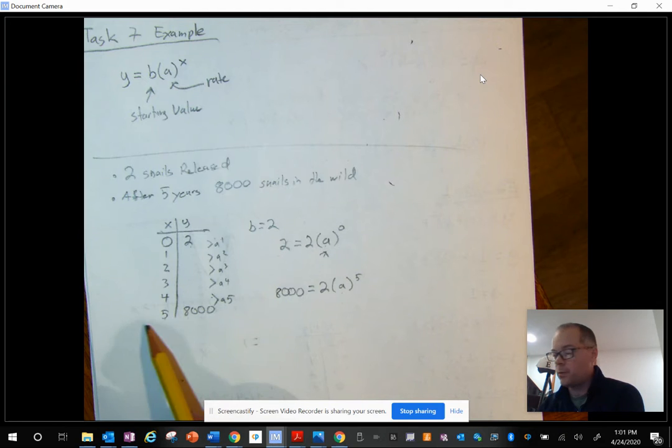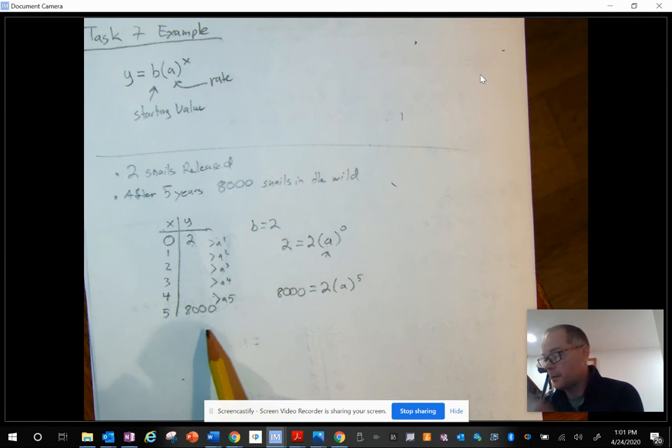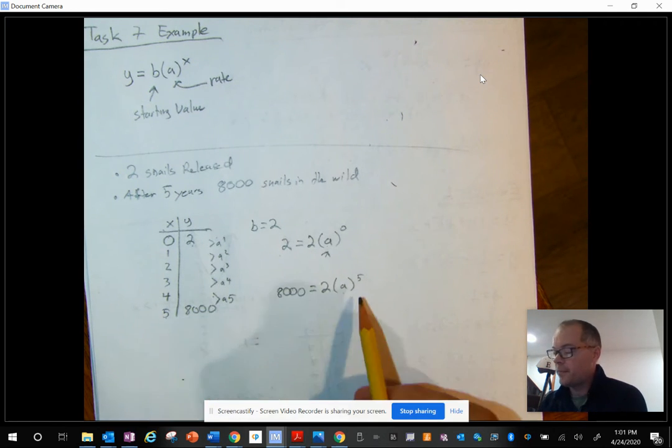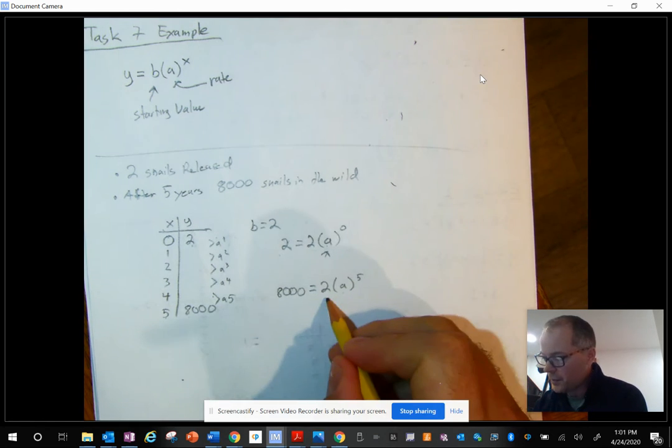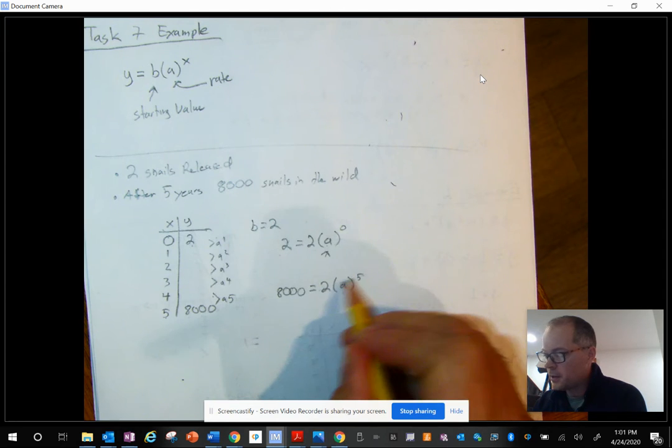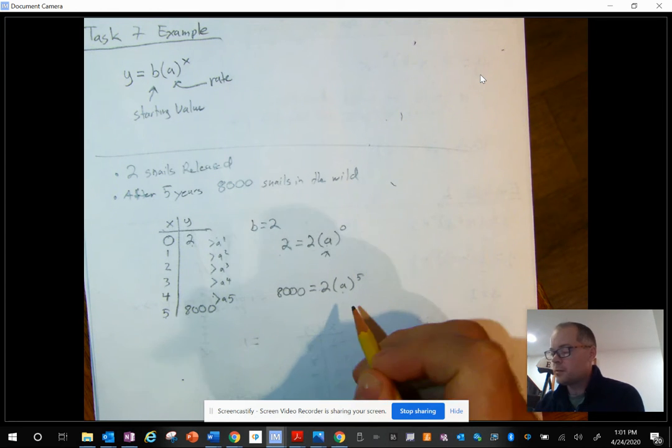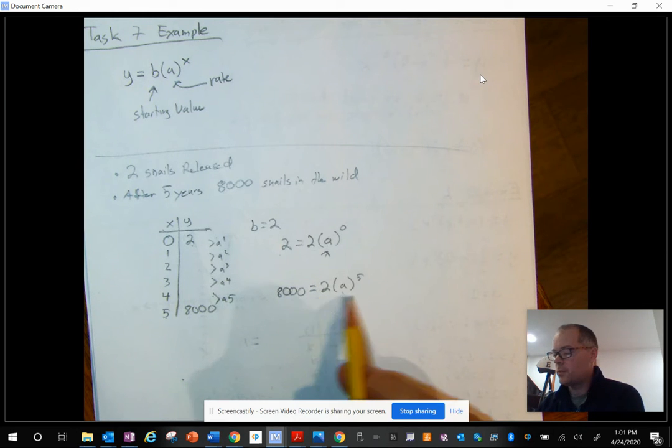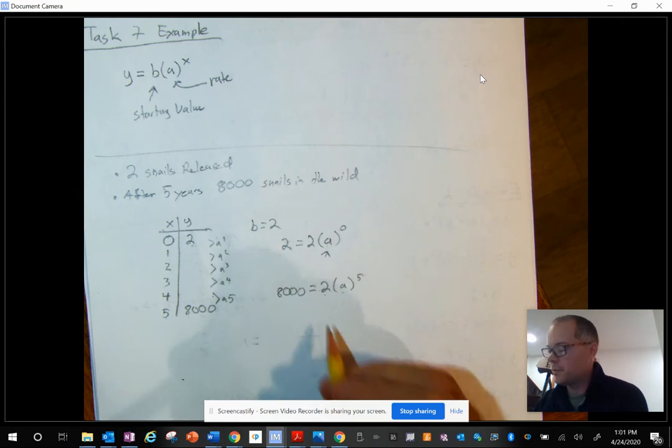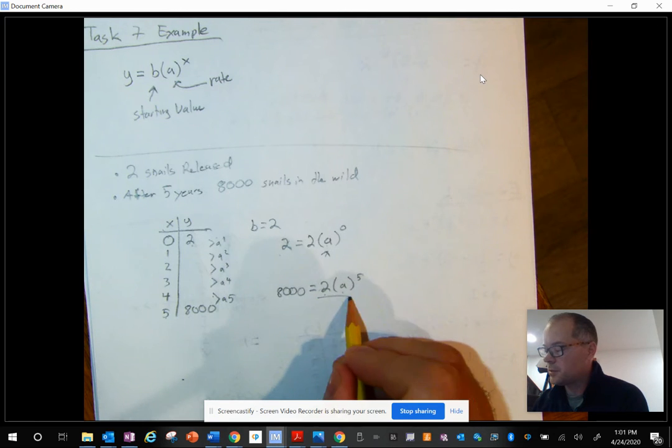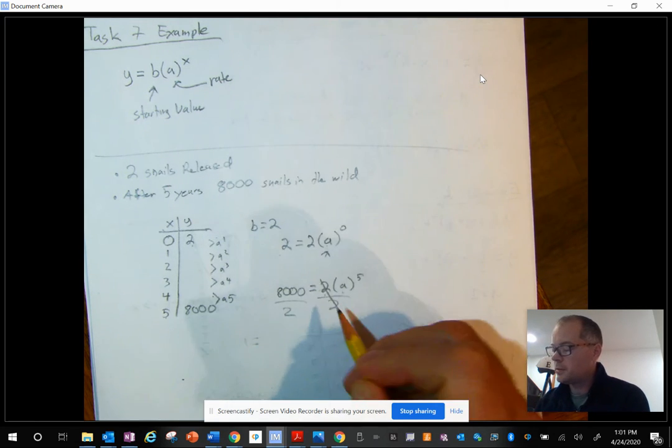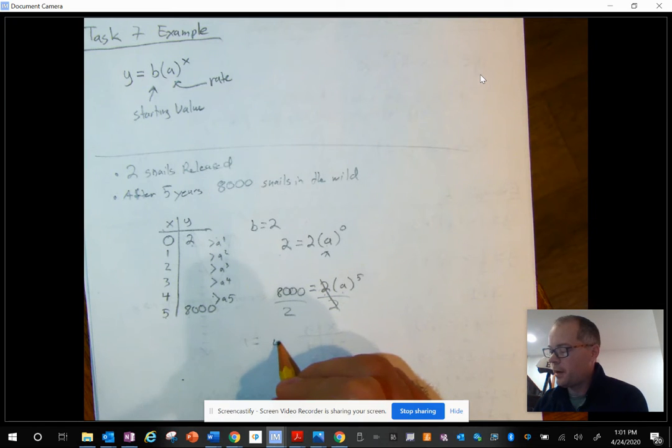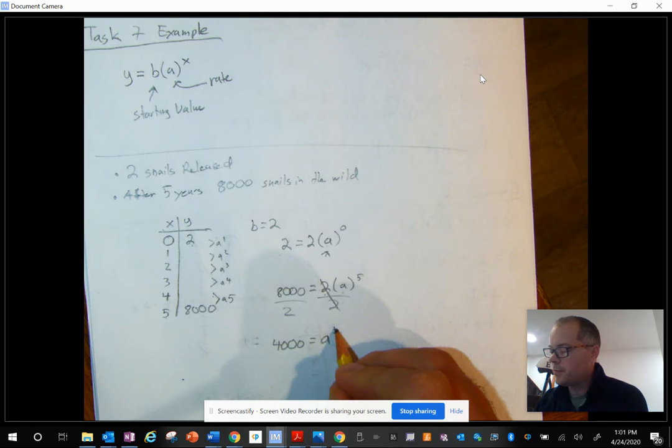We have to find another point on there where we know the amount of snails that are out there in the wild. So at five years, there's 8,000. So to figure out the rate at which this is increasing, we have to get rid of these things over here that are connected to the A. So just like we did in algebra, what we do to one side, we have to do the other. So let's go ahead and start with getting rid of this two. So if I divide both sides of this equation by two, these cancel out. I'm left with 4,000 equals A to the fifth power.